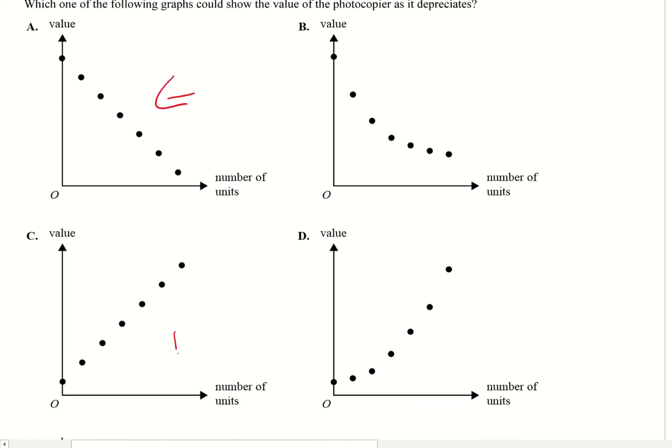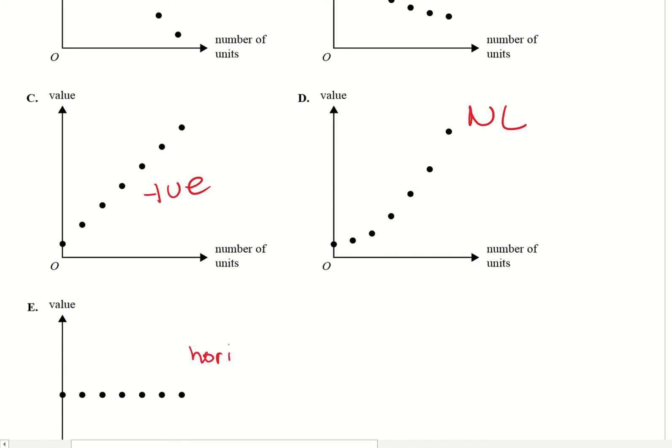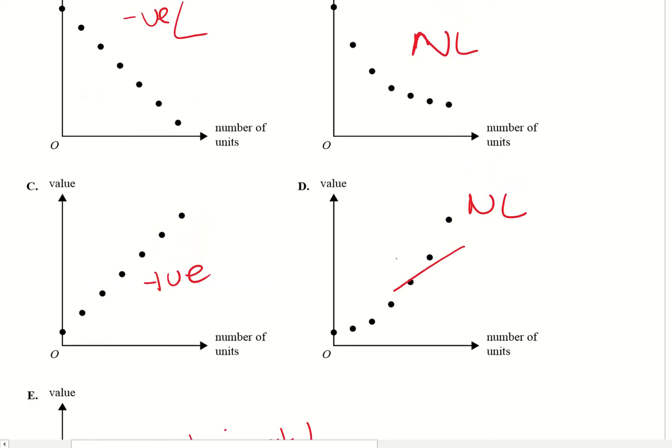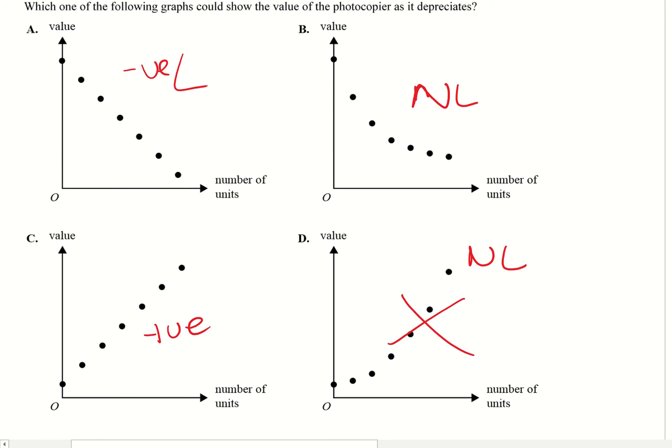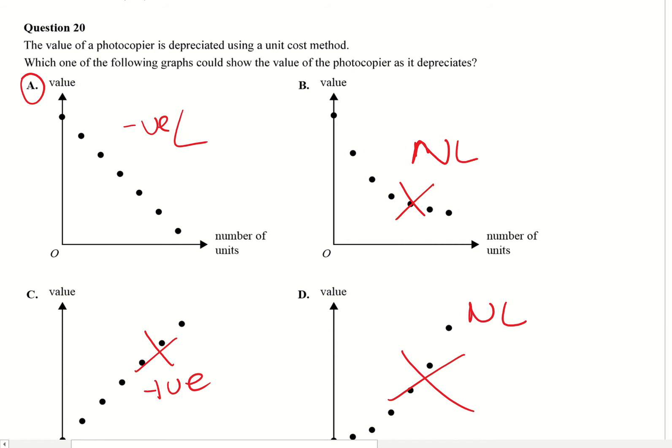So let's have a look at them. I've got linear, linear, non-linear, non-linear, and horizontal. Depreciation can't be horizontal, so we can get rid of that. Depreciation can't be increasing, so it can't be that. But when we're talking about unit cost, unit cost and flat rate are always going to be negative linear, so it can't be that because that's non-linear. And in this case, C is going positive, so it can't be that. So the answer is going to be A.